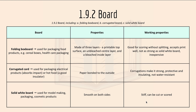Next is 1.9.2 board: folding box board, corrugated card, and solid whiteboard. Folding box board is used for packaging food products like cereal boxes and healthcare packaging. Properties include it's made of three layers — a printable top surface, an unbleached center layer, and a bleached inside layer. Working properties include it's good for scoring without splitting, accepts print well, but it's not as strong as solid whiteboard, and it's relatively inexpensive.